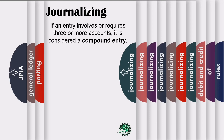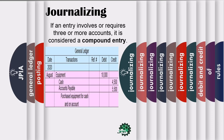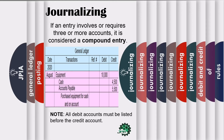There could be only one debit account and two credit accounts, or two debits and one credit, or two debits and two credits. It really depends on the transaction. Note: all debit accounts must be listed before the credit account — the debit account always comes first.